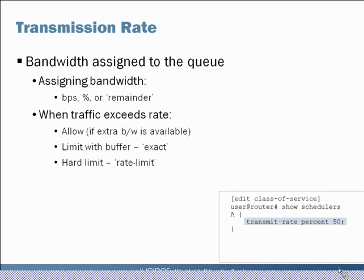What happens when you exceed your transmission rate? By default, if there's available extra bandwidth on your interface, you get to use that extra space — you can borrow into the other queues. You can also put a limit using the 'exact' command, so it reaches a configured limit and will not expand further. Another option is a hard limit using the 'rate limit' command — if you hit one megabit per second with that queue, you don't buffer it, you literally just drop it.